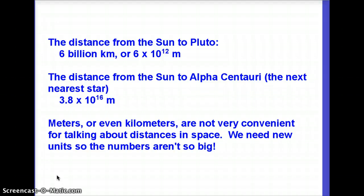Alpha Centauri is the nearest star other than the Sun, and it is about 3.8 times 10 to the 16 meters away — almost 10,000 times bigger than the distance from the Sun to Pluto. Going to other stars in the galaxy, or to another galaxy, the numbers get really, really big. Even kilometers are not convenient; we need a different set of units.